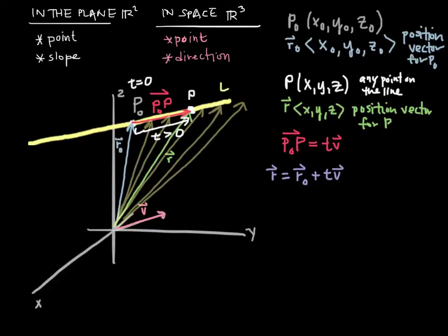Now, if t were allowed to assume negative values, we would be adding negative scalar multiples of v to our position vector r-naught, and so what would end up happening is we would be acquiring position vectors for points along the line to the left of p-naught in this picture.